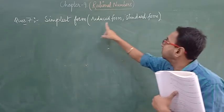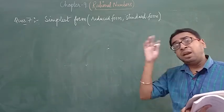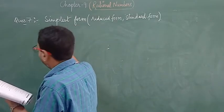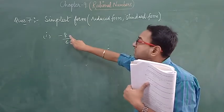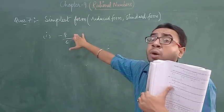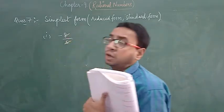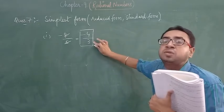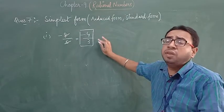Simplest form, reduced form, standard form — the question may come in any of these forms, so don't get confused. Let me take the first part: minus 8 by 6. Though the minus sign is there, only focus on reducing. Their HCF is not 1 — they have a common factor of 2 — giving minus 4 by 3. The HCF of 4 and 3 is 1, so they are in reduced form.